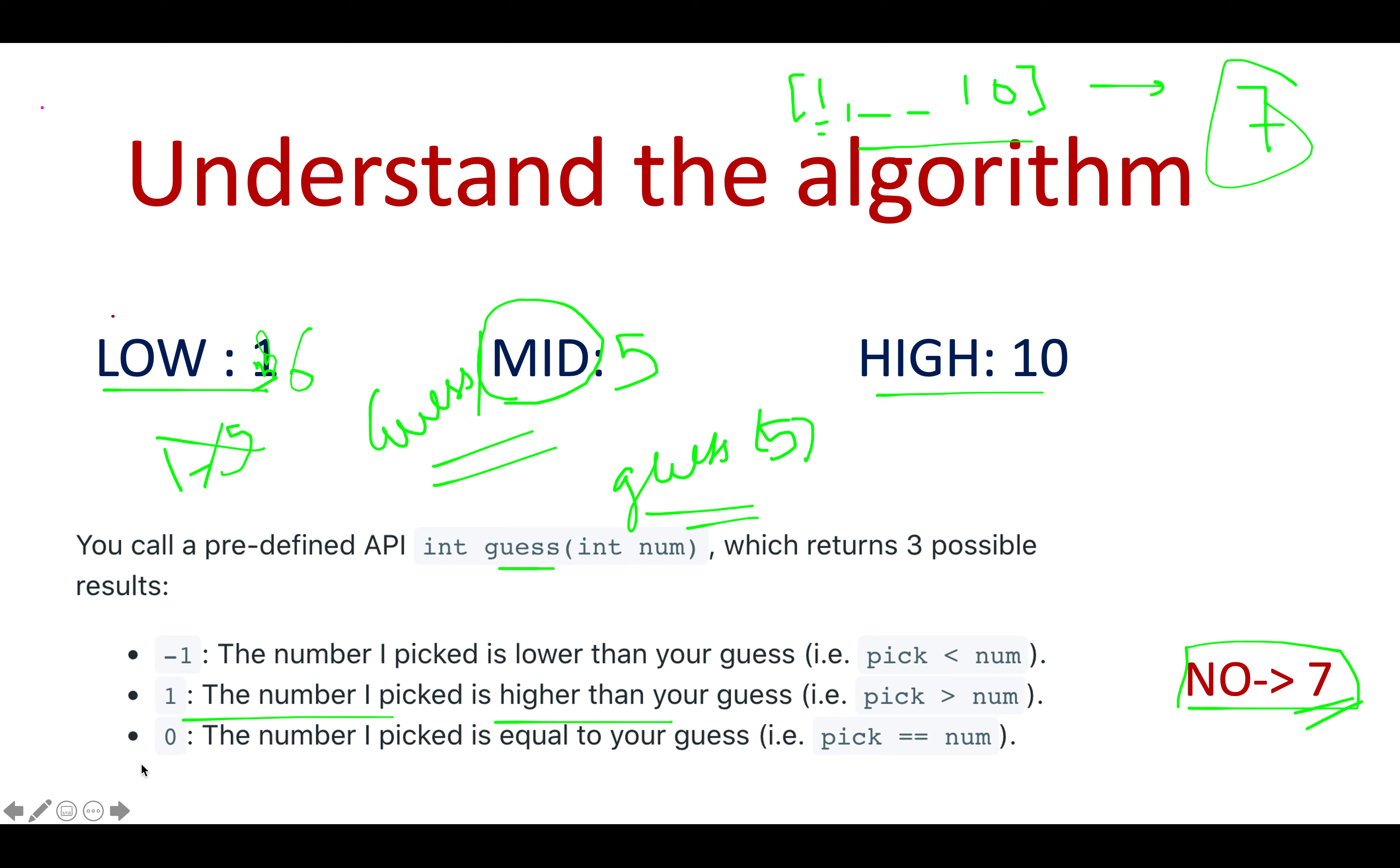Let's redo for the next iteration. Let's take blue. Low plus high is 16, 16 by 2 is eight. So what we are going to do: we'll invoke it on eight, guess of eight. What guess of eight will give us? Minus one, because the picked number is lower than our guess.